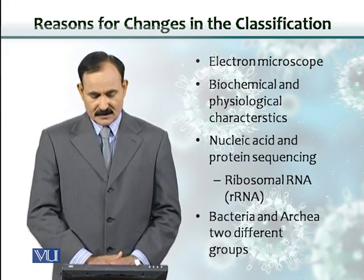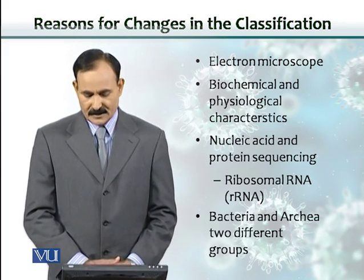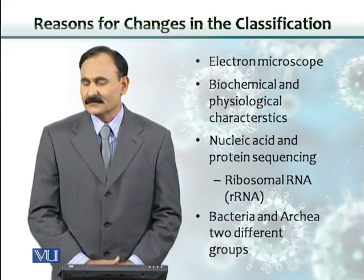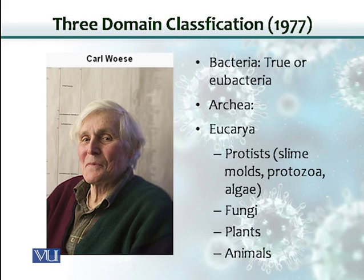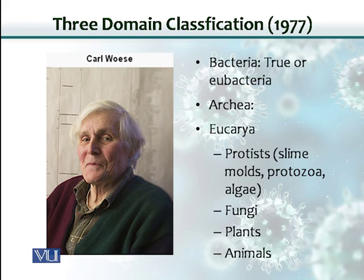They found that bacteria and archaea belong to two different groups. So in 1977, Carl Woese, an American microbiologist, proposed that the word domain should be introduced into this classification. Now all organisms are put into three domains that include Bacteria, like true bacteria, Archaea, and then all eukaryotic cells are placed in Eukarya, which includes protists, fungi, plants, and animals.